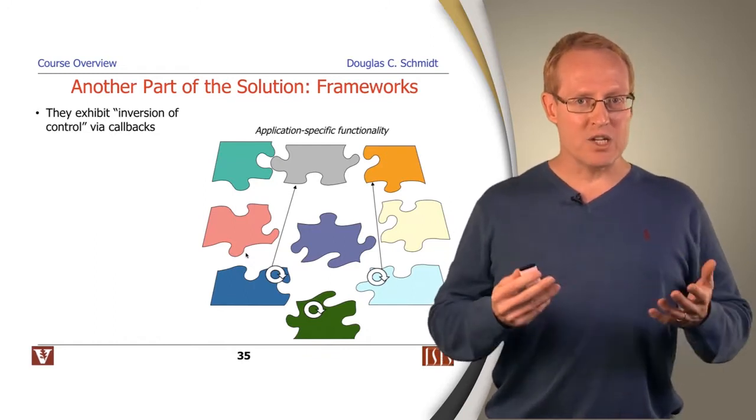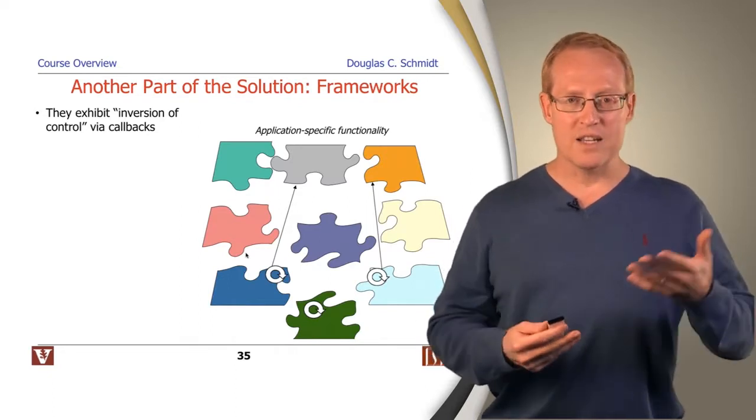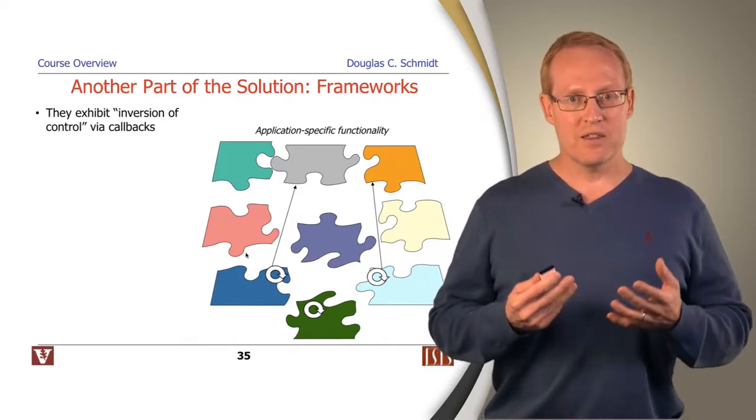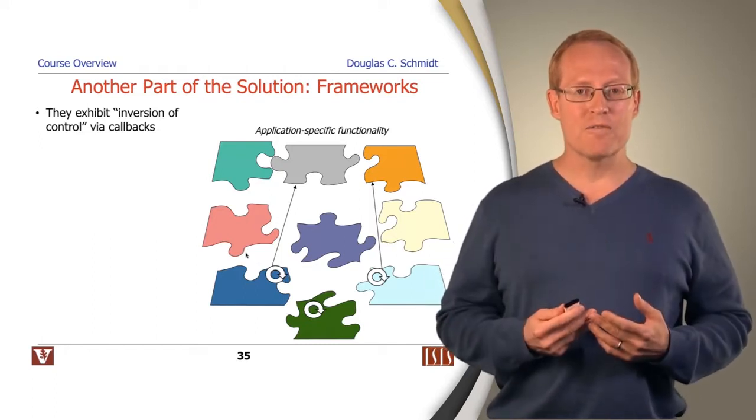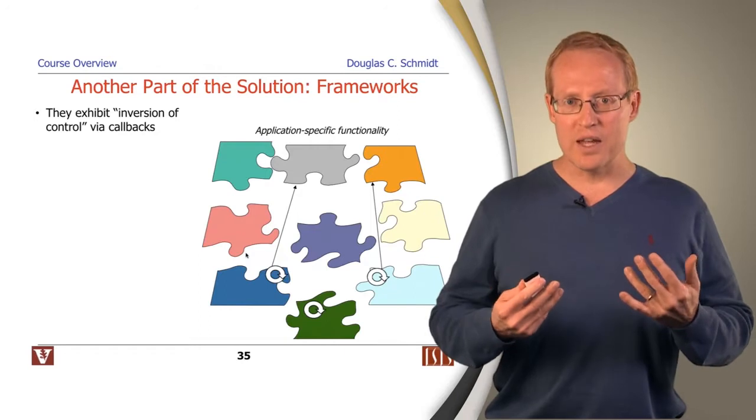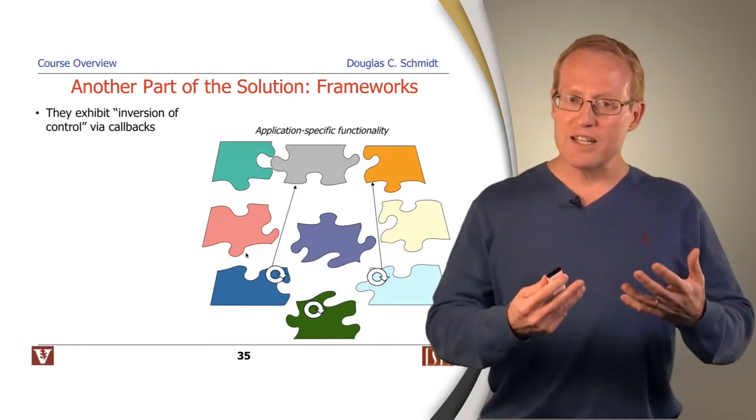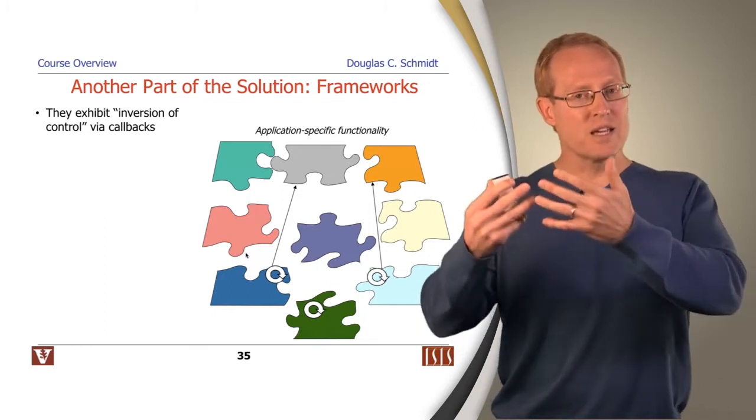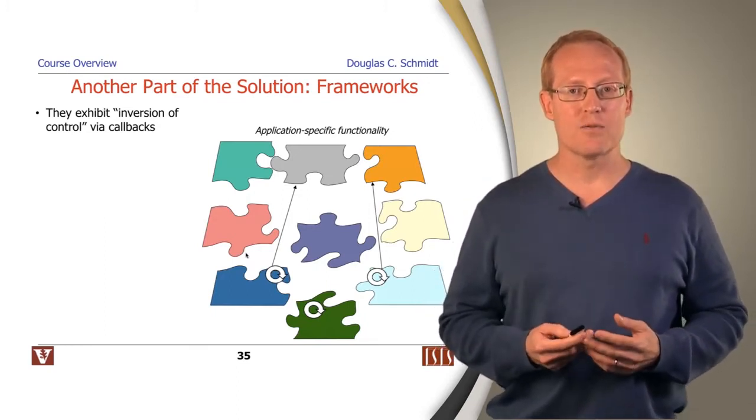Rather than an application or some software being self-directed, doing things when it wants and how it wants, instead the framework owns the event loop or event loops. You register your objects with the framework and when things occur that you've indicated you're interested in, the framework is responsible for detecting what's happened and then demultiplexing and dispatching the various events to your event handlers to do various kinds of work.